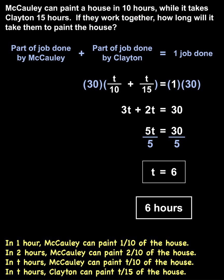Finally, it's a good idea to check your answer. If they work together for 6 hours, then Macaulay paints 6 tenths of the house, and Clayton paints 6 fifteenths of the house. So we have 6 tenths plus 6 fifteenths equals 1.